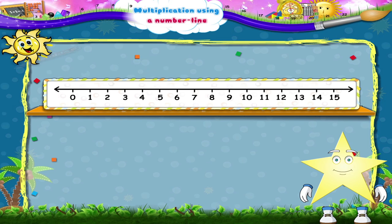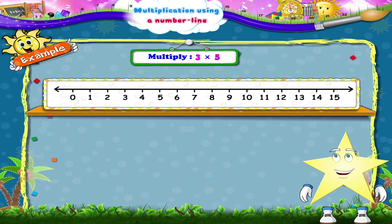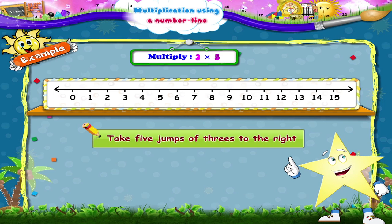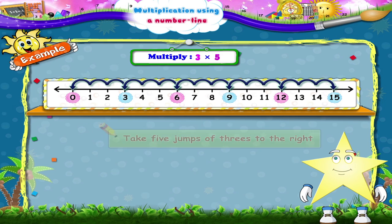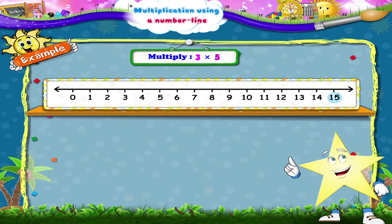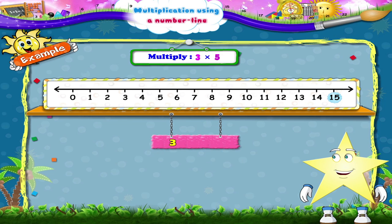The next example is three taken five times. So what will you do Starry? Yes, take five jumps of threes to the right. So from zero you jump to three, then six, nine, twelve, and fifteen. We reach the number fifteen. So three into five equals fifteen.